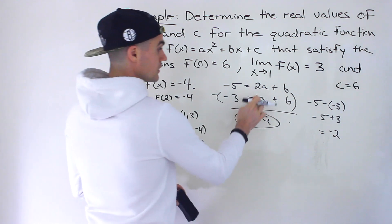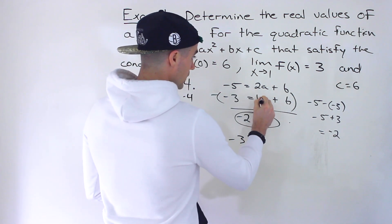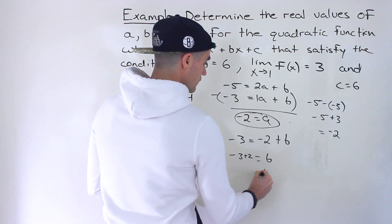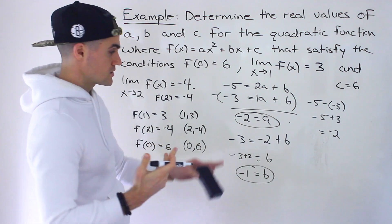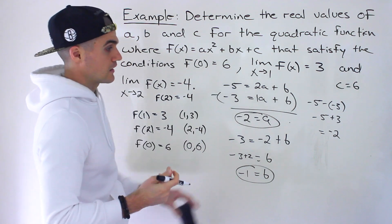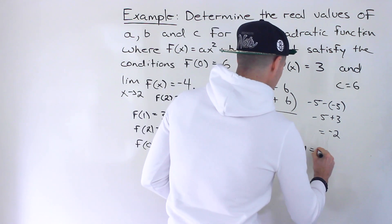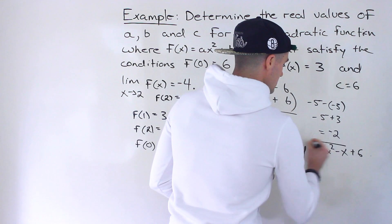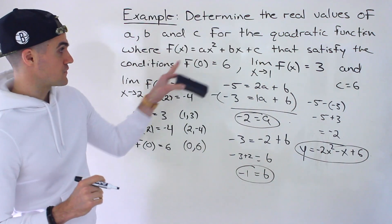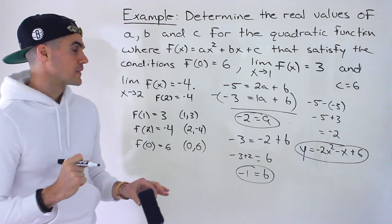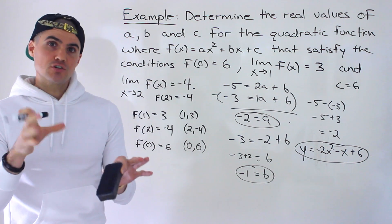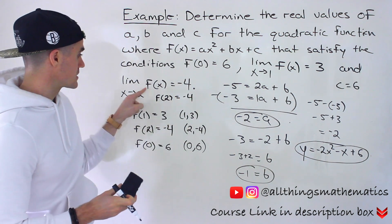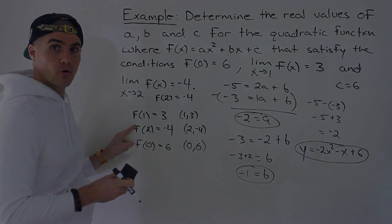We can solve for b by substituting a equals negative 2 into the first equation: negative 2 plus b equals negative 3, so b equals negative 1. So a equals negative 2, b equals negative 1, c equals 6. The quadratic is negative 2x squared minus x plus 6. That satisfies all the given conditions. The key was recognizing continuity of the quadratic, then using the definition of continuity to rewrite the limits as function values.